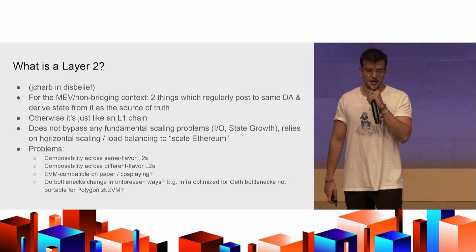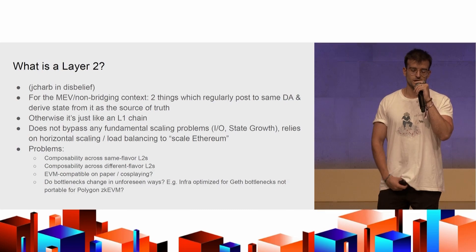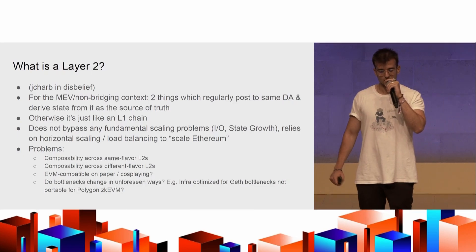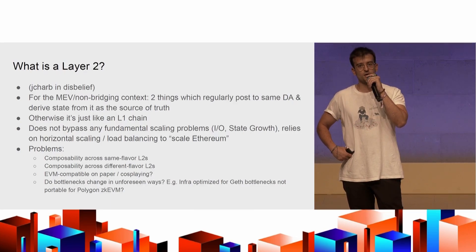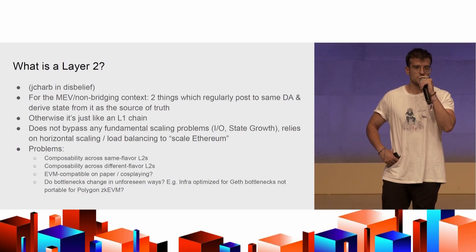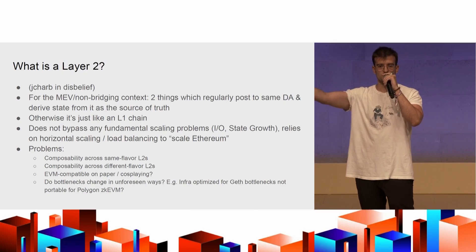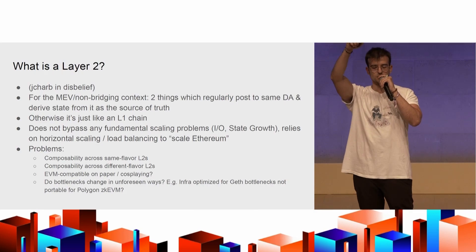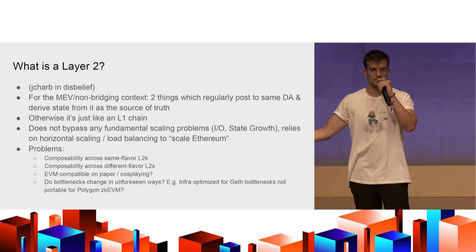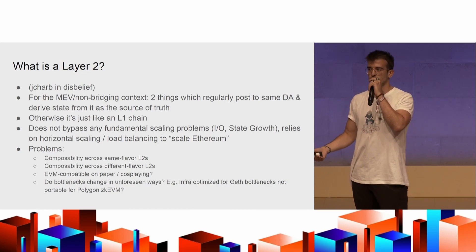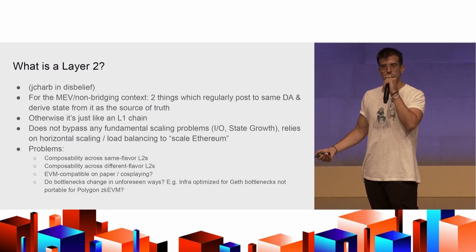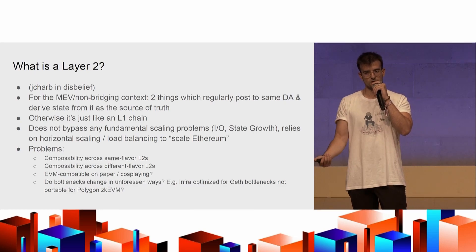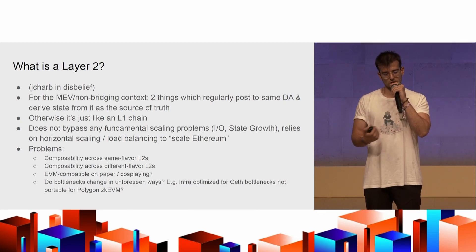We'll talk about layer 2 just from the context of not bridging. The main thing about layer 2s that we care about right now is that you have some off-chain state that gets posted to layer 1, which is called the data availability layer. That ensures that anybody who wants to recreate the state of the layer 2 can go and look at the layer 1 and very easily derive it. Typically there is a deterministic derivation function, different in each system, which allows you to do that.